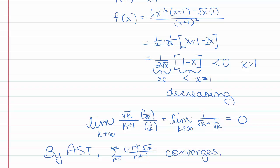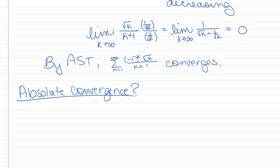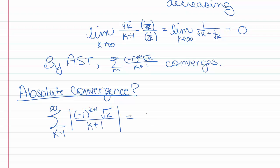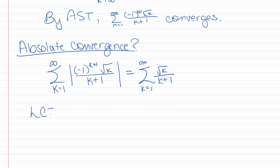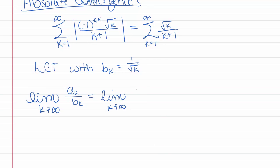But that only tells us it converges — it doesn't tell us whether it converges absolutely or conditionally. To check absolute convergence, we need to check the sum of the absolute value, which is the sum k goes from 1 to infinity of square root of k over k plus 1. We can do the limit comparison test with b sub k being 1 over square root of k, because it behaves like 1 over square root of k. So we're looking at the limit as k goes to infinity of a sub k over b sub k, which is the limit of square root of k over k plus 1, times square root of k over 1, giving the limit of k over k plus 1, which equals 1.